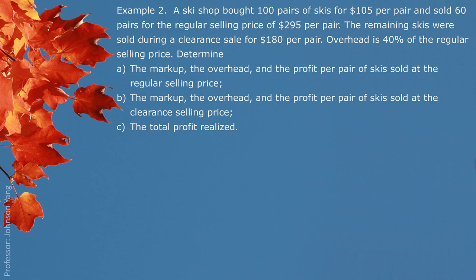Part A: The markup, overhead, and profit per pair of skis sold at regular price. With the regular selling price $295 and cost of buying $105, that would give us the markup as the difference, $190.